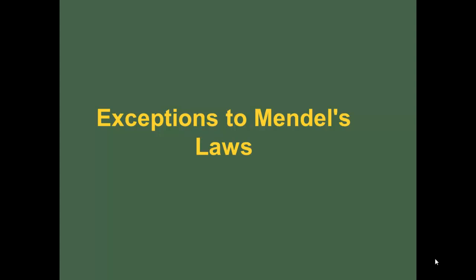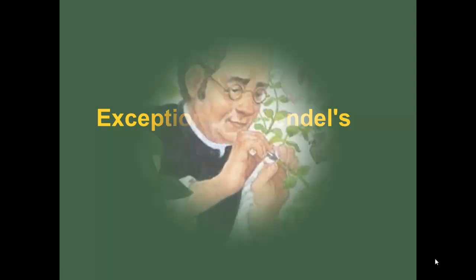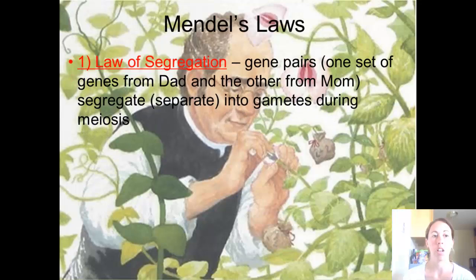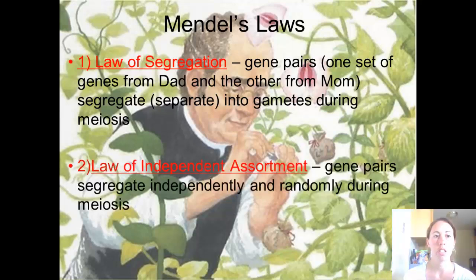Exceptions to Mendel's Laws. Before we go into the exceptions, let's review Mendel's laws. He had three laws. The first is the law of segregation: gene pairs — one set of genes from the dad and one set of genes from the mom — separate into gametes during meiosis.